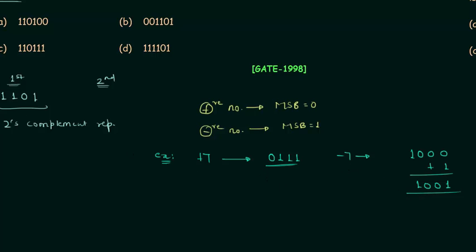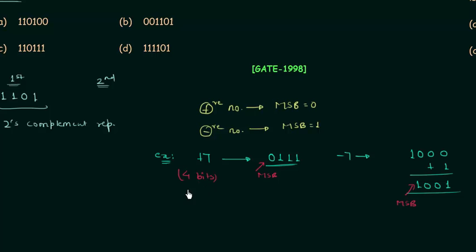You can see we have MSB equal to 0 in case of +7, and MSB equal to 1 in case of -7. This is how we represent +7 and -7 each using 4 bits.